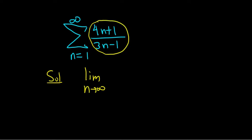You just take the limit as n goes to infinity, and typically you eyeball it. If you take this limit, you'll notice that the degrees are the same, and so the answer is going to be 4 over 3. If you take this limit and it's not 0, the answer is diverges. So in this case, it diverges.